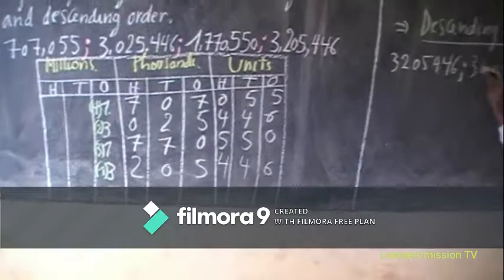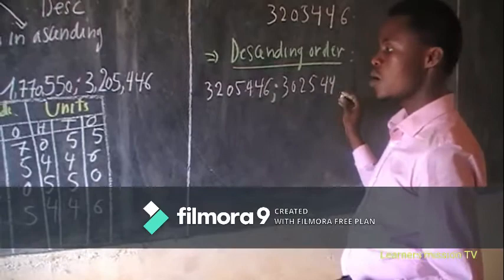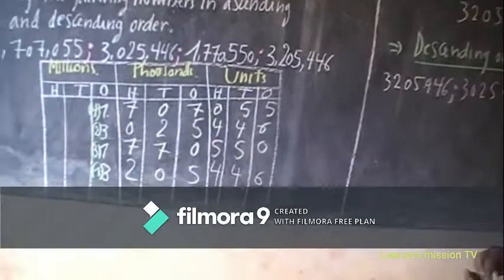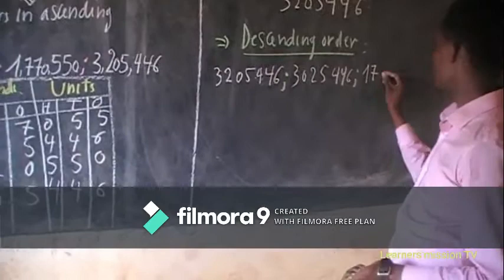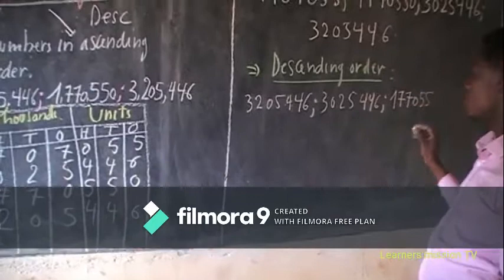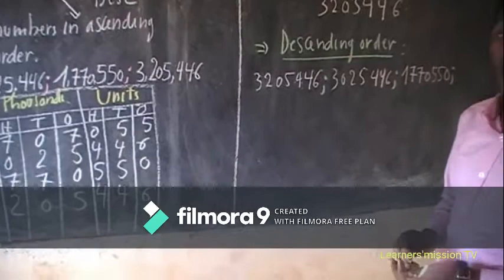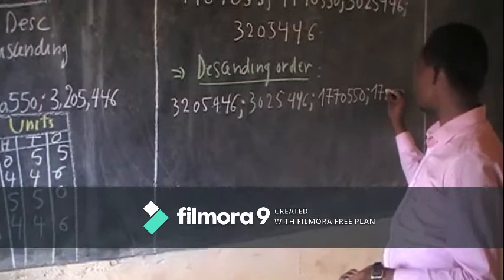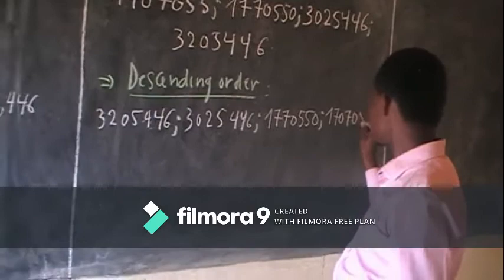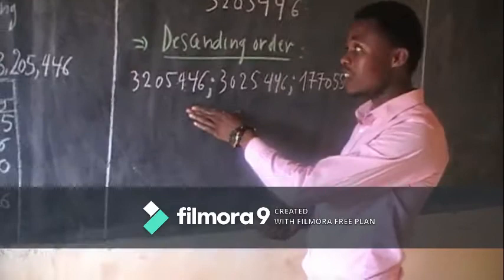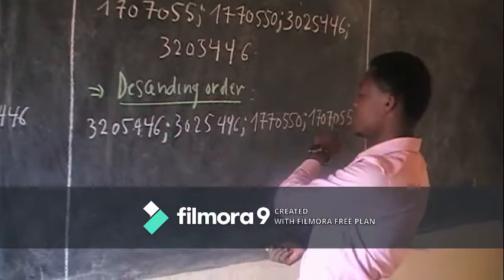Next: two, three, zero, two, five, four, four, six. Then: three, one, seven, seven, zero, five, five, zero. The smallest is number four: one, seven, zero, seven, zero, five, five. These numbers are arranged in descending order.